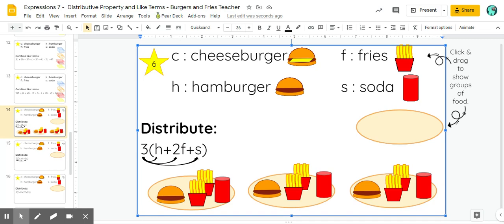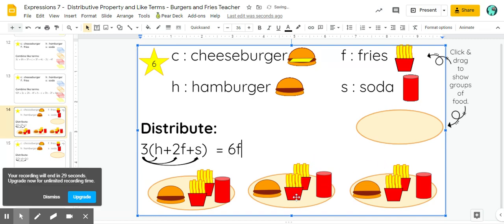I'm going to start with the cheeseburgers, because that's first in the alphabet. Oh, there are none, so I don't have to write anything. Then for the fries, we have two, four, six. So six fries. And then for my hamburgers, I have one, two, three. And for my sodas, I have one, two, three. And that is our final answer.